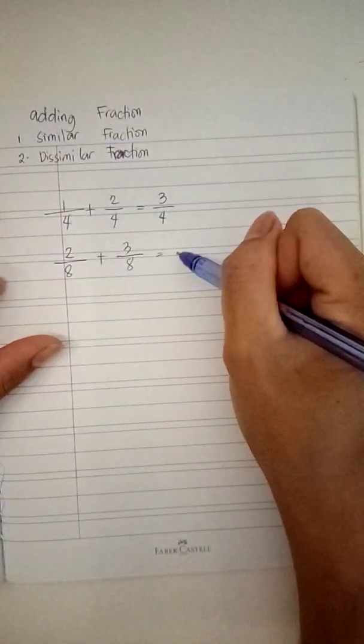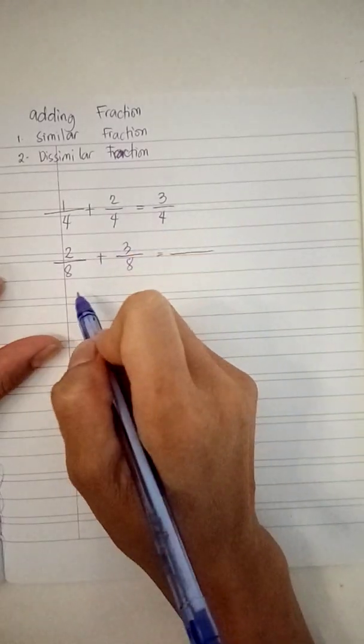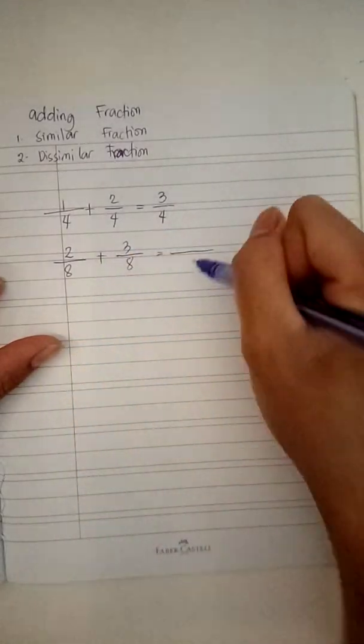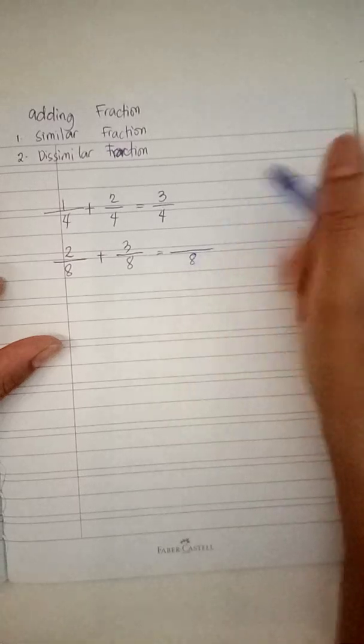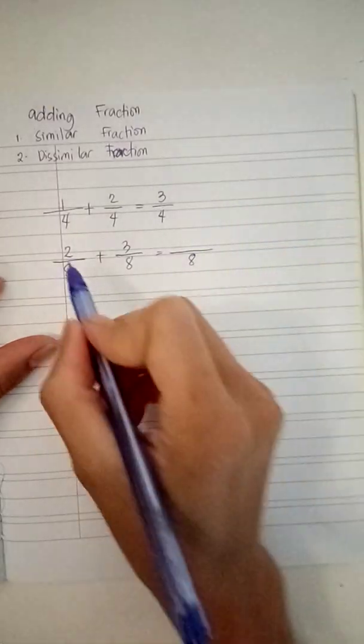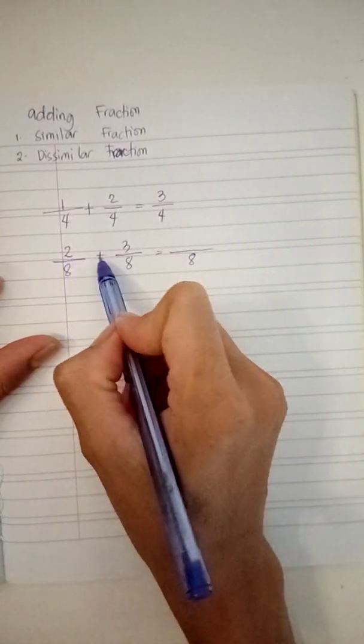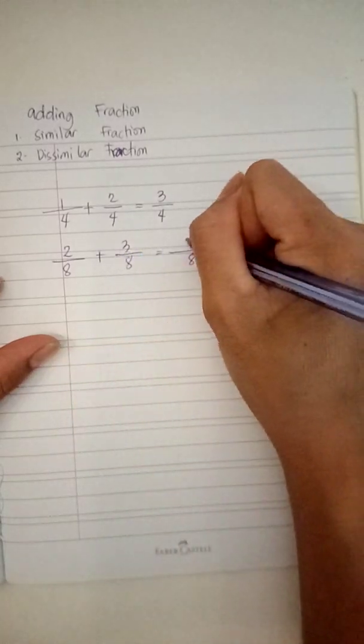Two over eight plus three over eight. As what I said, because they are similar fractions, you just simply copy the denominator, which is eight, and simply add the two plus three equals five.